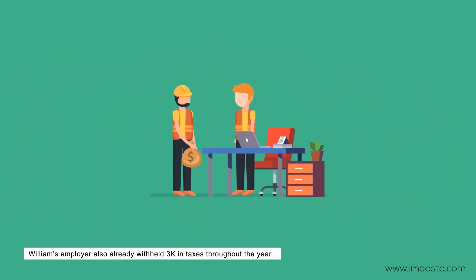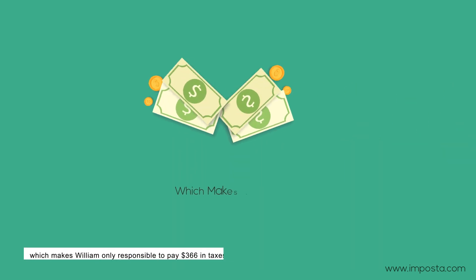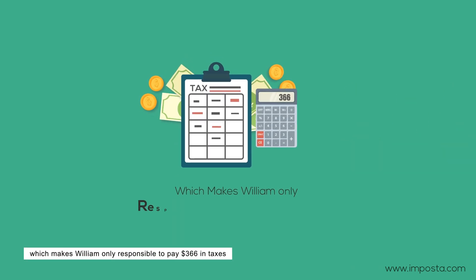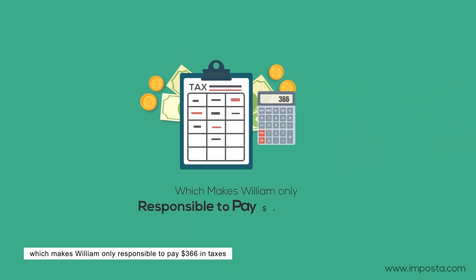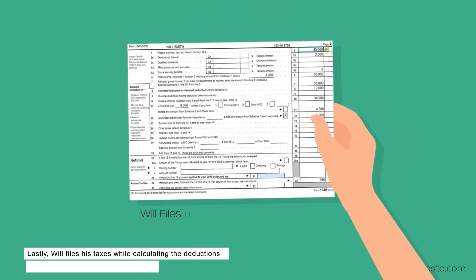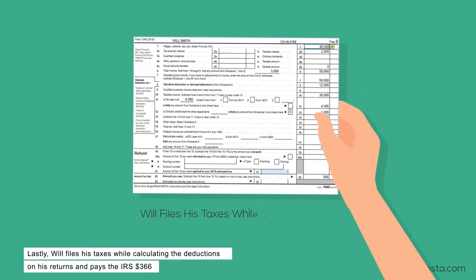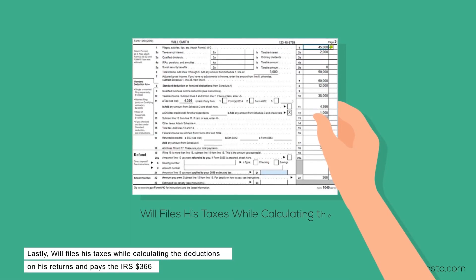William's employer also already withheld $3k in taxes throughout the year, which makes William only responsible to pay $366 in taxes. Lastly, Will files his taxes while calculating the deductions on his return and pays the IRS $366.